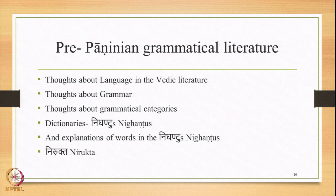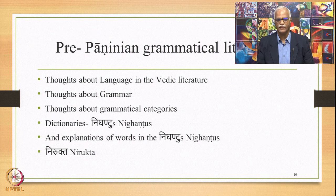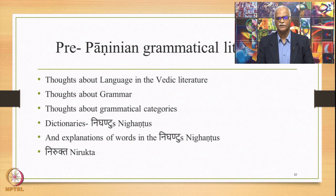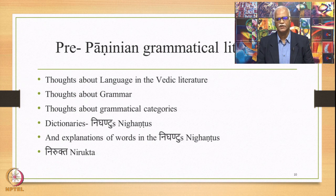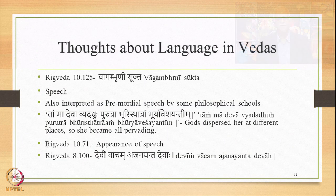In the pre-Paninian grammatical literature, we do find thoughts about language, mainly in the Vedic literature to begin with. There are thoughts about grammar, thoughts about grammatical categories, and there is a lexicon available in the form of Nighantus and explanations of words in the Nighantus. The semantic explanation is provided in the celebrated text called Nirukta, which is also considered to be one of the six limbs of the Veda — Vedanga. Let us look at the thoughts about language found in the Vedas, in brief.